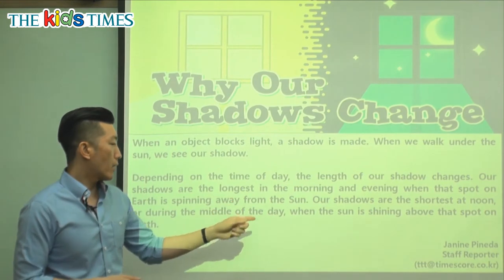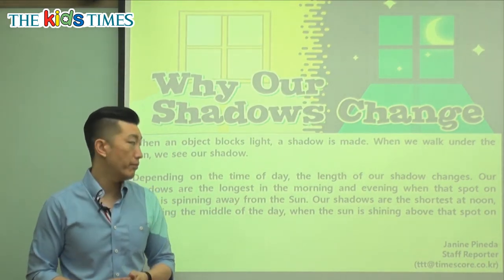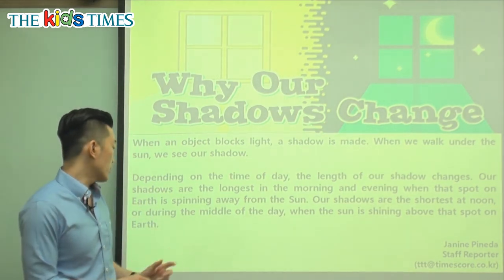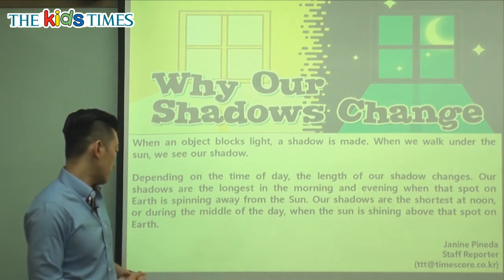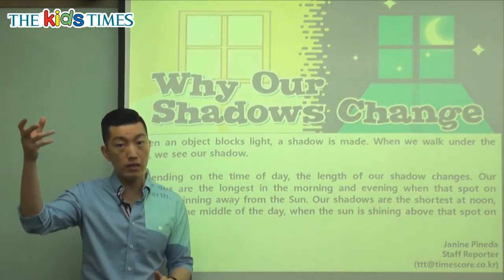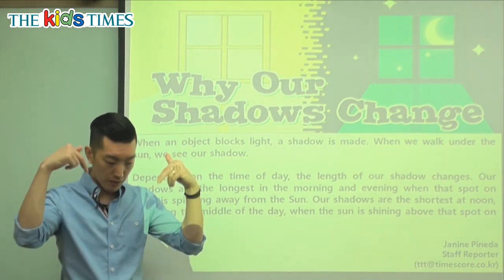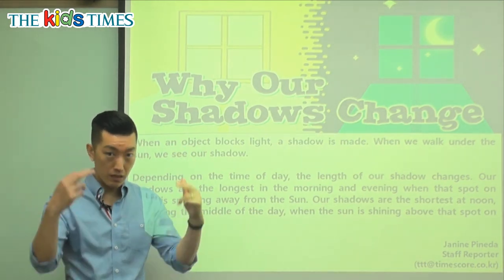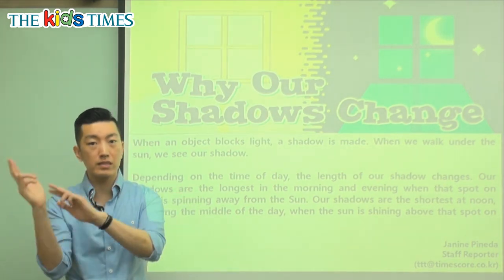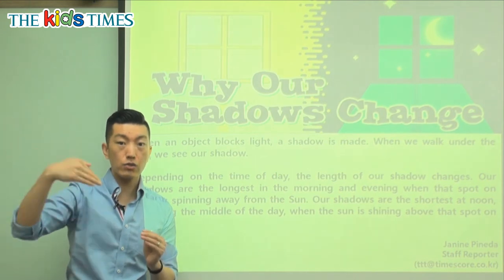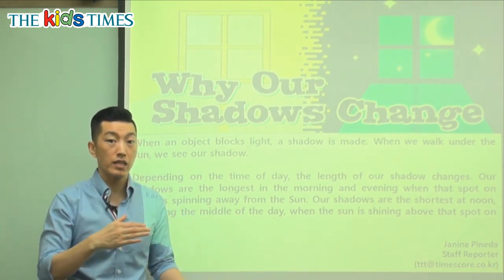Our shadows are the shortest at noon — noon is 12 o'clock or lunchtime. It's the shortest during the middle of the day when the sun is shining above that spot on Earth. When the sun is right on top of us, that's when there's less shadow because the sun is coming straight down. But when the sun is lower or at an angle, the shadow becomes longer.